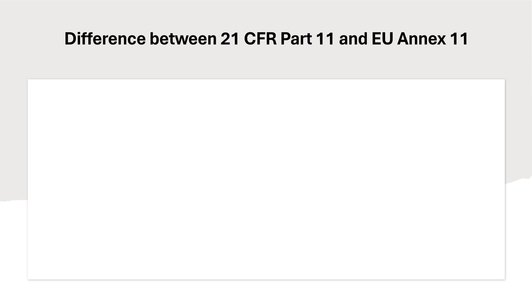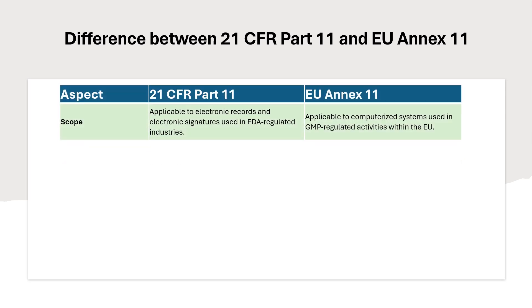So here we will discuss the difference between 21 CFR Part 11 and EU Annex 11. The first point is scope. 21 CFR Part 11 is applicable to electronic records and electronic signatures used in FDA regulated industries. Whereas EU Annex 11 is applicable to computerized systems used in GMP regulated activities within the European region, and focuses on the validation of computerized systems.